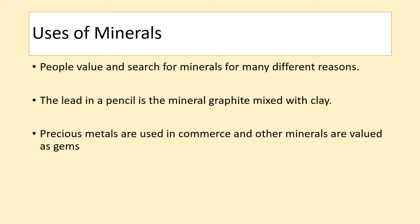People value and search for minerals for many different reasons. For example, the lead in a pencil is not actually lead but it's a form of carbon called graphite. So the lead in your pencil is made up of the mineral graphite found in certain rocks mixed with some clay. Precious metals are used in commerce and other minerals are valued as gems — things like gold, silver, platinum, diamonds, rubies, emeralds and sapphires are all forms of minerals which have value because people want them to make jewellery.